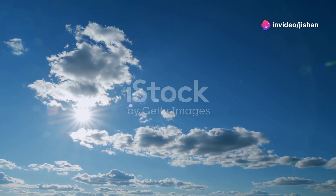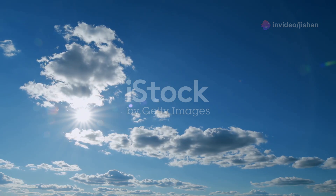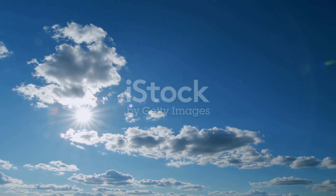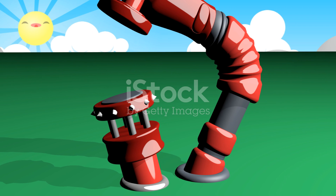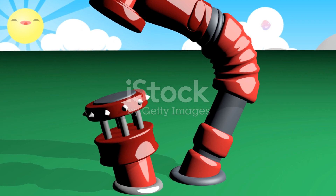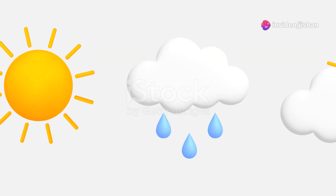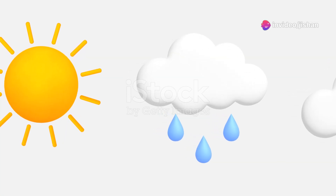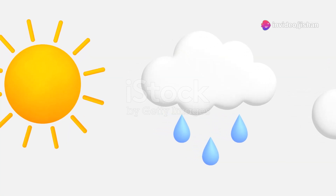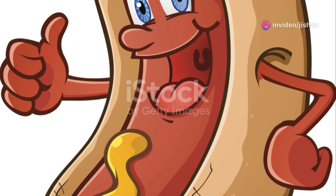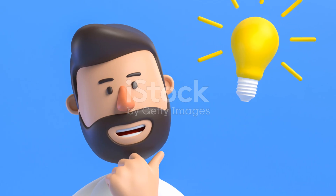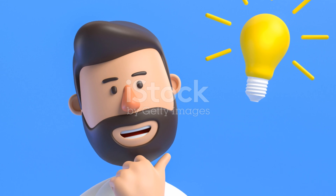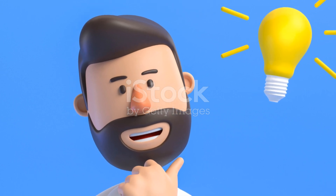So to sum it up, insolation is all about how much solar energy reaches a specific area of the Earth. It's influenced by latitude, the sun's angle, the length of the day, the Earth's surface, and the atmosphere. Understanding insolation helps us grasp how climate and weather work, which is super important for everything from farming to planning your beach vacation. That's it for today's deep dive into insolation - I hope you found this as fascinating as I did. Keep exploring, keep learning, and until next time, stay curious.